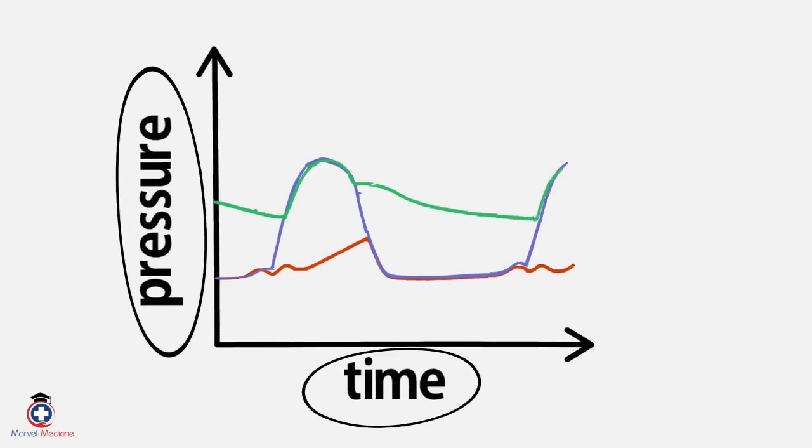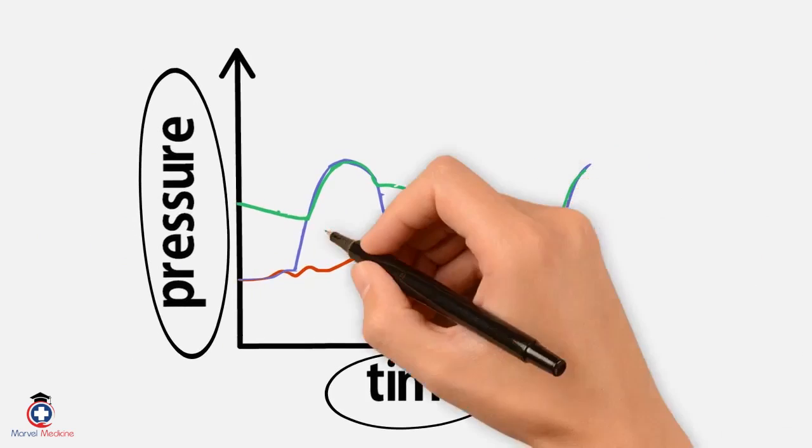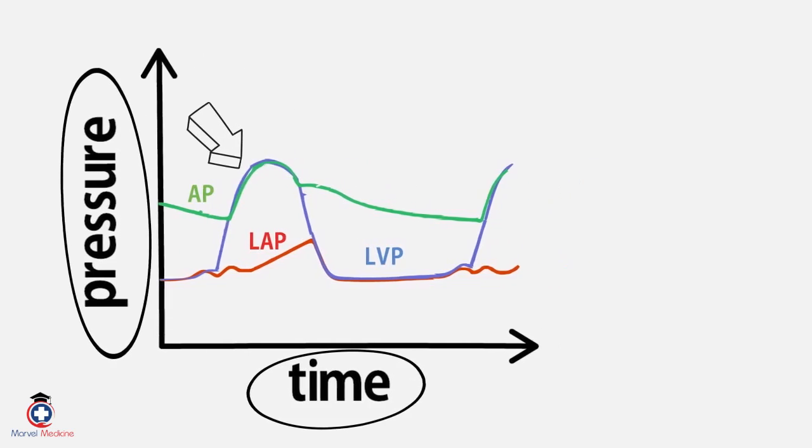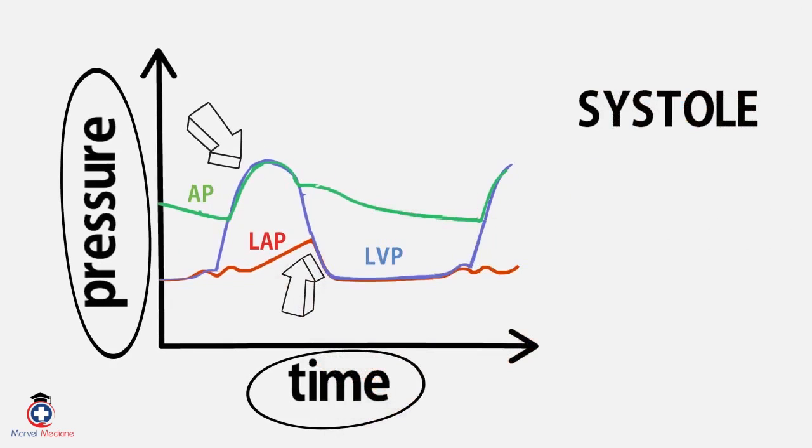There's a left ventricle pressure line, a left atrial pressure line, and an aortic pressure line. It shows that the pressure goes up in the aortic and left ventricle. That must mean it's systole. Then the pressure drops. That means diastole.